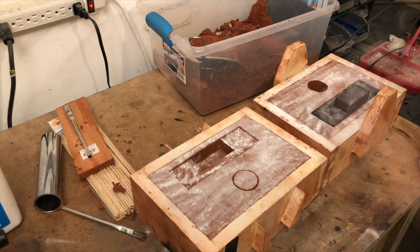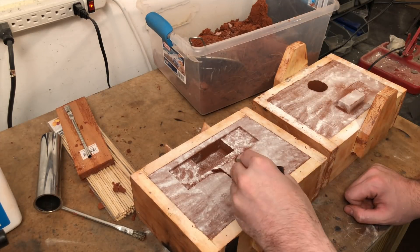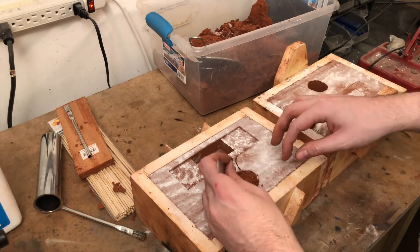With both sides packed, I remove the pattern and start the cleanup process. I cut one large gate, connecting the pattern to the sprue.